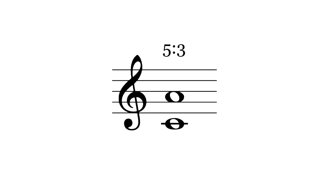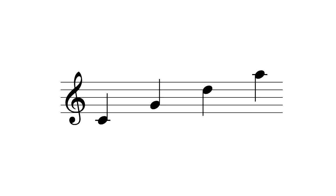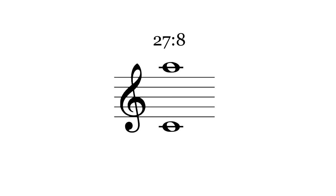Take this major sixth, C and A. The just ratio of a major sixth is 5 to 3. However, if you tune these three perfect fifths as 3 to 2, you get 27 to 8. Let's lower that an octave by dividing by 2. This gives us 27 to 16, which is slightly higher than 5 to 3.